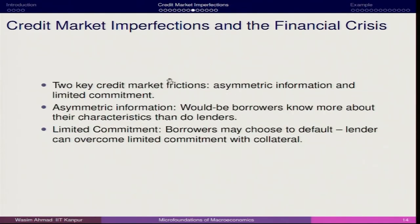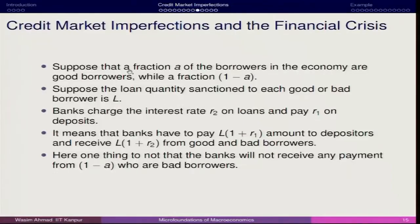Suppose that a fraction A of borrowers in the economy are good borrowers, while a fraction 1 − A are bad borrowers. The loan quantity sanctioned to each good or bad borrower is L. Banks charge interest rate R2 on loans and pay R1 on deposits, which means that credit market asymmetry exists where R2 is the borrowing interest rate and R1 is the lending interest rate.